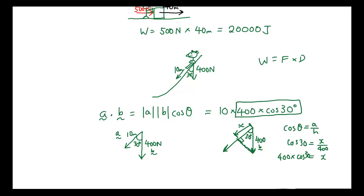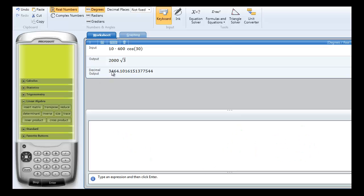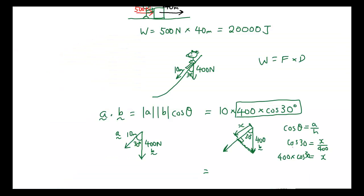So that's how the dot product is applied in this instance, to find the amount of force that is applied in the same direction as the person travelling. So if you type that in your calculator, the answer is 3464.1 joules rounded to 1 decimal place. Hope you guys now have a better understanding of how the dot product works. See you guys next time.